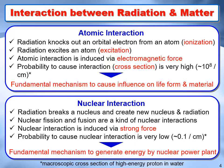Next, we will explain the interaction between radiation and matter. There are two types of radiation-induced interaction: atomic interaction and nuclear interaction. By atomic interaction, radiation knocks out an orbital electron from an atom — so-called ionization — and radiation excites an atom, so-called excitation. Atomic interaction is induced via electromagnetic force that can reach a long distance. Therefore, the probability to cause atomic interaction is very high, approximately 10 to the 8th times per centimeter. This is the fundamental mechanism to cause influence on life forms and materials.